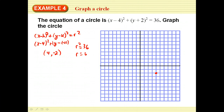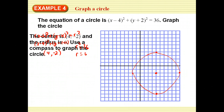The easiest approach is to count out 6 units from the center in each direction — right 6, up 6, left 6, and down 6 — placing dots at each point. We can then freehand a circle through those four points, or use a compass to draw it accurately.